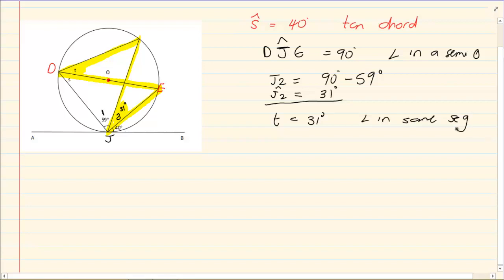You cannot put 'butterfly' or 'bow tie' in your exam paper — the examiners will not mark those. They want the correct wording and correct reasoning, which is 'angles in the same segment'. Those informal reasons will not be accepted.